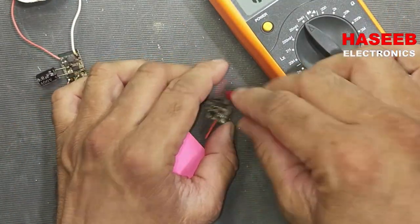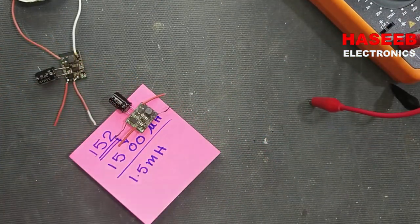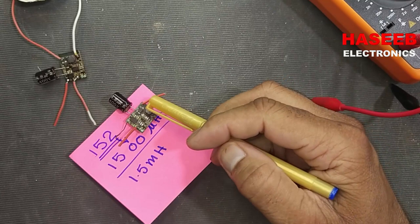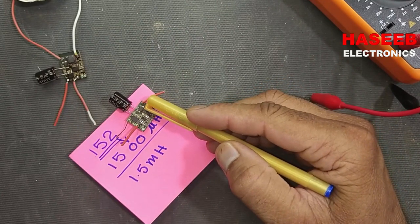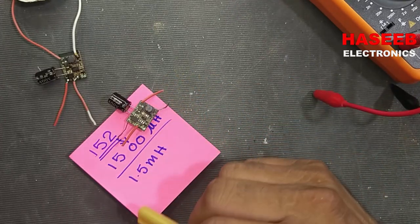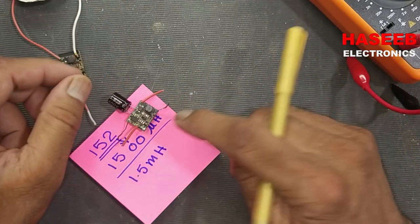Why is it giving 1.6 millihenry? In inductors and transformers, when we calculate its inductor value in calculation, it is 1.5 millihenry or 1500 microhenry. When we design practically...